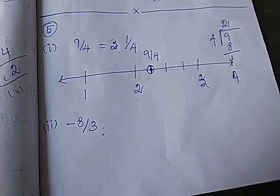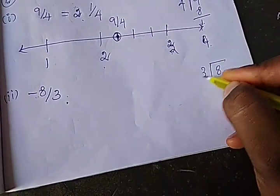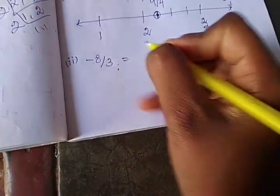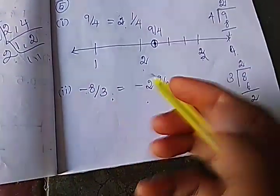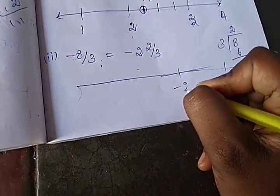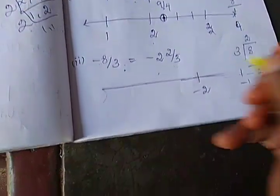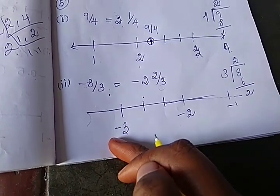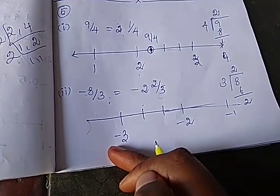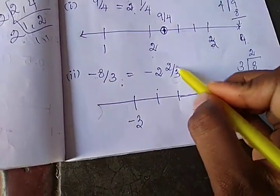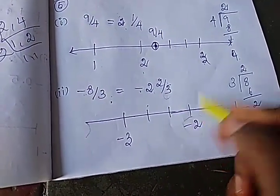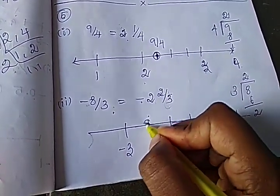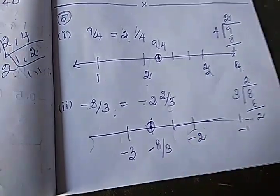So next one is minus 8 by 3. 8 by 3 — convert the fractional number as usual to the mixed fraction. 8 divided by 3: 2 threes are 6, remaining 2. So minus 2 and 2 by 3. So minus 2 is on the left-hand side, between minus 1 and minus 2. Total number of lines is 3: 1, 2, 3. The continuing integers go from minus 2 to minus 3. So minus 2 is the starting number, second place. The value of minus 8 by 3 is marked there.